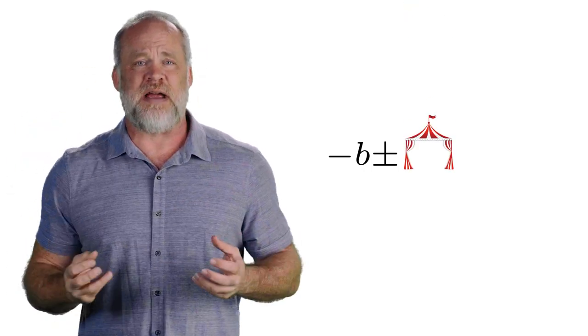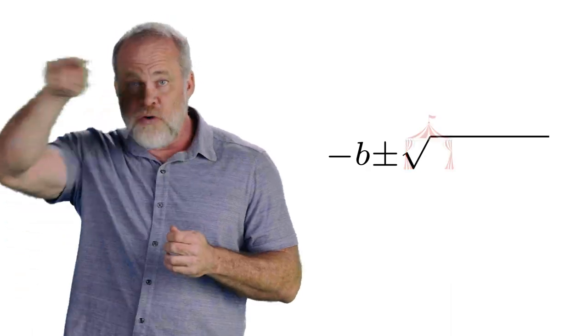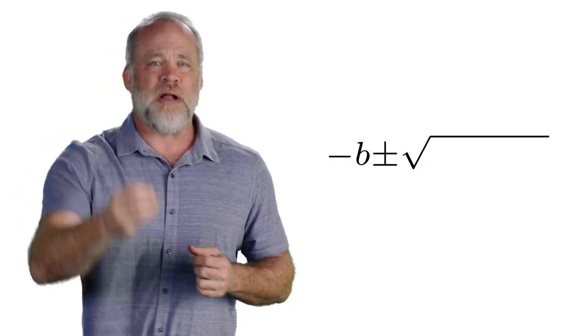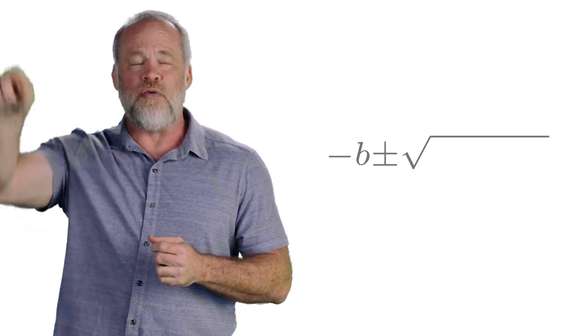Now the b flies off of the cross and he flies into a circus tent. The circus tent for us is the square root symbol. It kind of looks like a tent. Negative b plus or minus the square root. A negative b lands on a cross and then he flies off the cross and into a circus tent for square root.